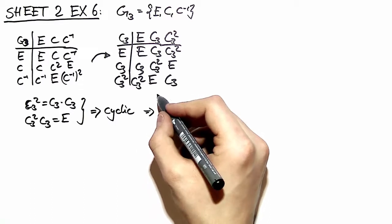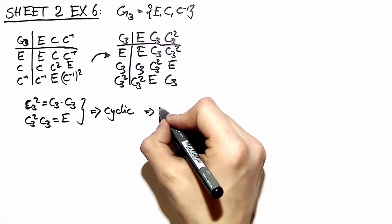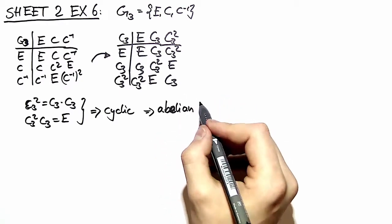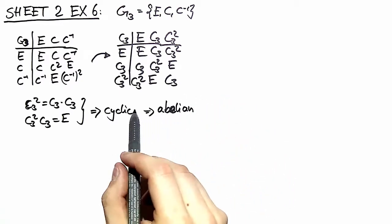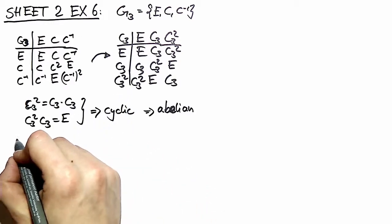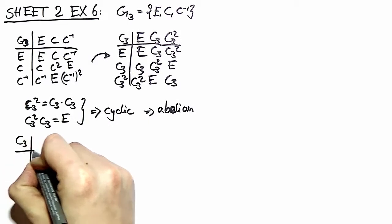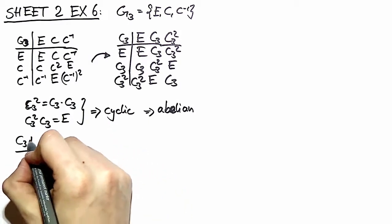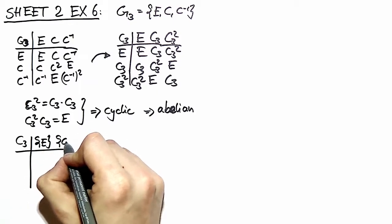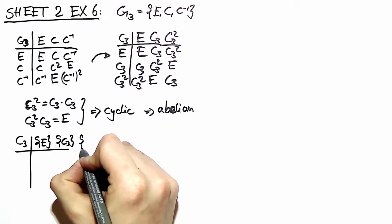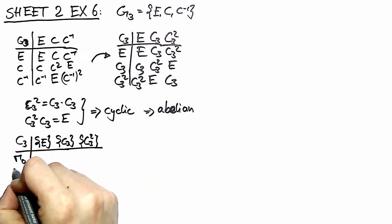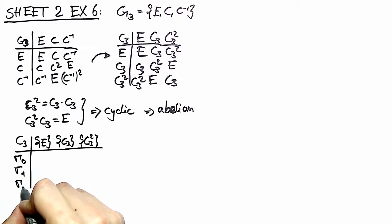From problem 3a of exercise sheet 1, we see that it's also Abelian. In order to find its irreducible representations we have to construct the character table of our group C3. Because it's Abelian and because we have no inversion element, all elements belong to different conjugacy classes. Therefore we have three irreducible representations, all with dimension one.